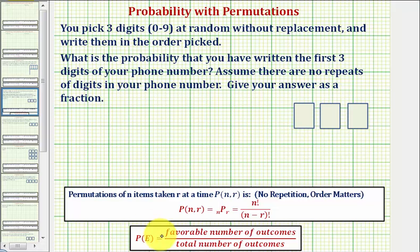To find the probability of an event, we take the favorable number of outcomes and divide by the total number of outcomes. So to find the probability of this event, let's begin by determining the total number of outcomes, which would be the total number of ways that we can pick three digits from the digits zero through nine at random without replacement when the order matters.